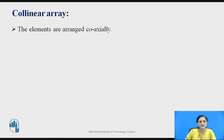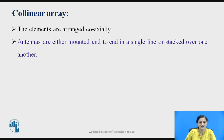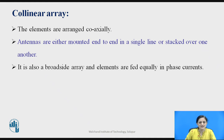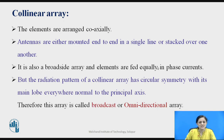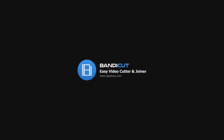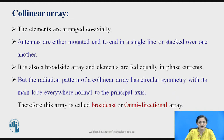What is the collinear array? The collinear array is one in which the elements are arranged coaxially, that is, along the same axis. These antennas are either mounted end to end in a single line or stacked over one another. It is also like a broadside array antenna because the elements are fed equally in phase. The radiation pattern has circular symmetry with its main lobe normal to the principal axis, and this type of radiation is why it is called an omnidirectional array. Therefore, the collinear array is also known as the broadcast or omnidirectional array.